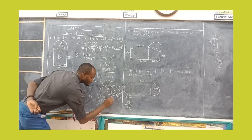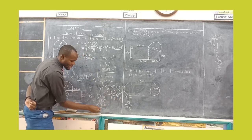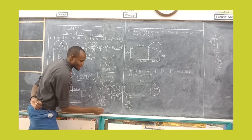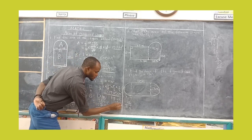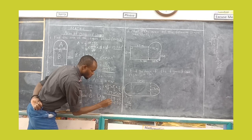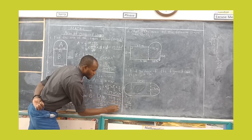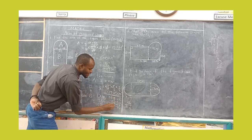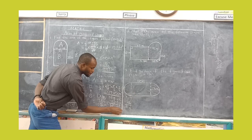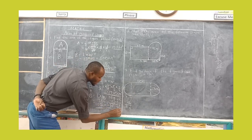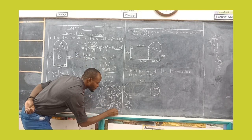Now you add the two areas together. We have 19.25 cm² plus 102. Here we don't have a decimal point, so we assume the decimal point is at the end — 102.00. Adding: 5 plus 0 is 5, 2 plus 0 is 2, 9 plus 2 is 11 — write 1 carry 1, 1 plus 0 plus 1 is 2. The answer becomes 121.25 cm².